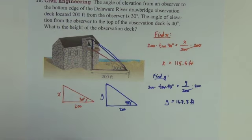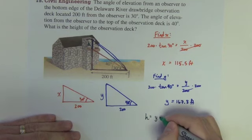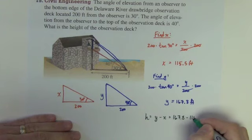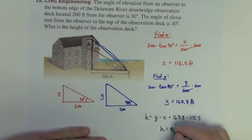Okay, well now the height h that we want is the y, the longer one, minus the x. It is 167.8, minus 115.5. Our height h is 52.3 feet.